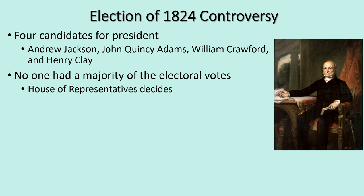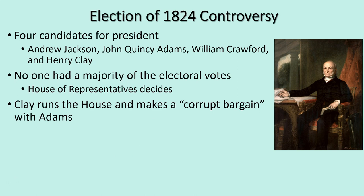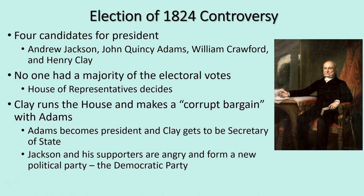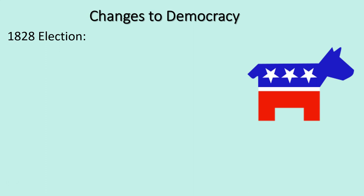Because no one has a majority of the electoral votes, the House of Representatives has to decide who's going to become president. Normally the House would select from the top three candidates, but Crawford ends up having a stroke and doesn't make a real good candidate. That leaves Andrew Jackson and John Quincy Adams. Henry Clay, who is the Speaker of the House, makes a deal with Adams: if he can sway enough votes so Adams gets elected instead of Jackson, Adams will make Clay his Secretary of State — a surefire stepping stone to the presidency. When Jackson and his supporters lose this vote, they form a new political party — the Democratic Party, basically the same one that exists today.